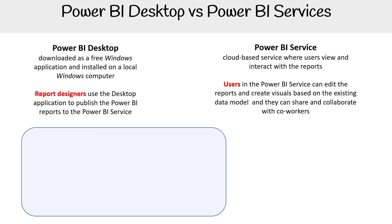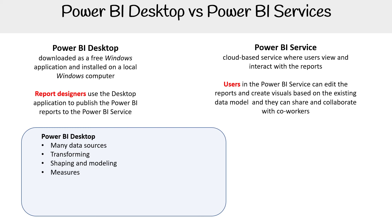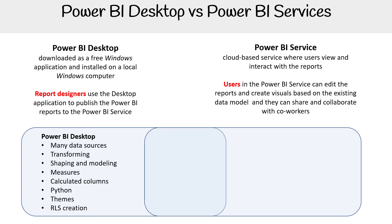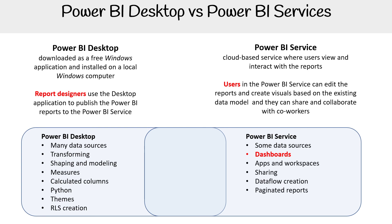Looking at the overlapping and unique features: Power BI Desktop has many data sources, transforming, shaping, and modeling measures, calculated columns, Python, themes, and RLS creation. On the Power BI Service side, you have some data sources, dashboards — which is the key thing for Power BI Service that you don't get in Desktop — apps and workspaces, sharing, data flow creation, paginated reports, RLS management, and gateway connections.